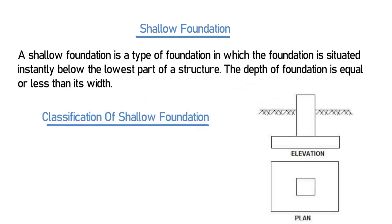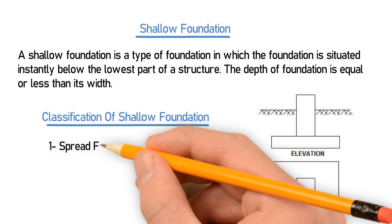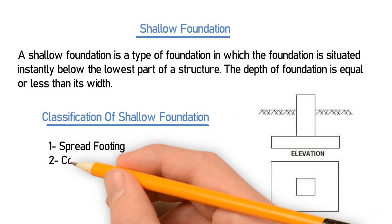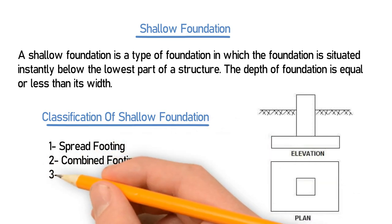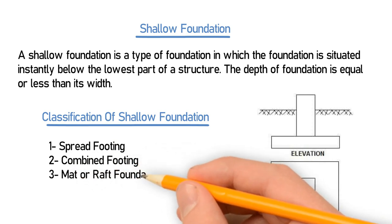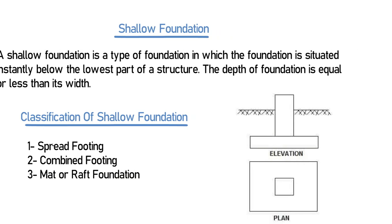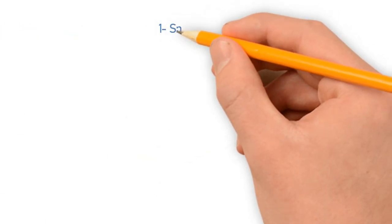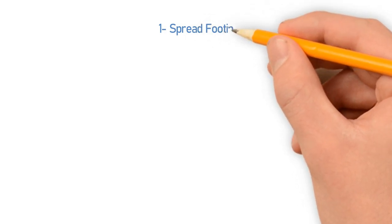Let's discuss the classification of shallow foundation. There are three basic classifications: number one is spread footing, number two is combined footing, and number three is mat or raft foundation. Let's discuss each one of them in detail.